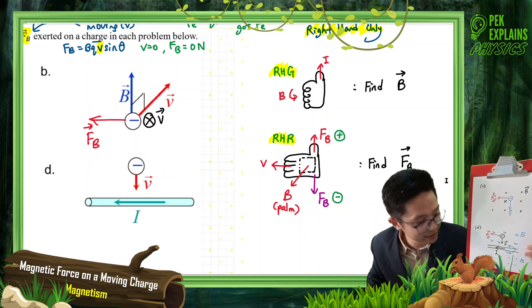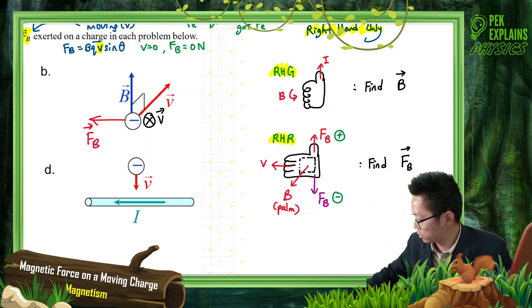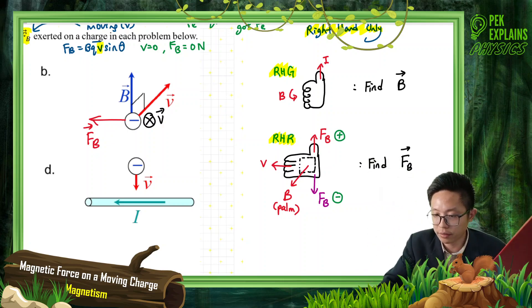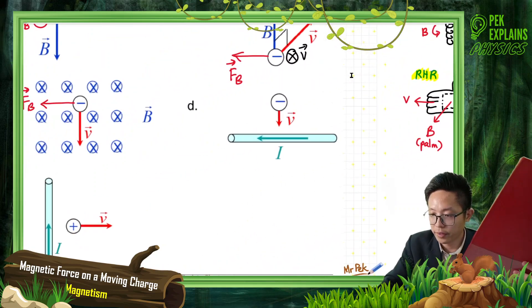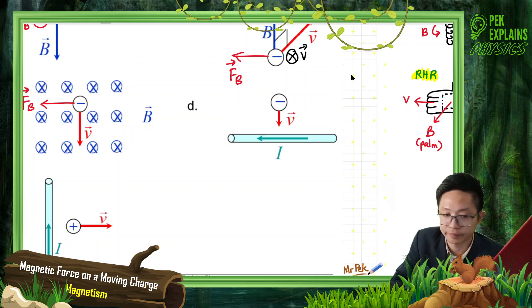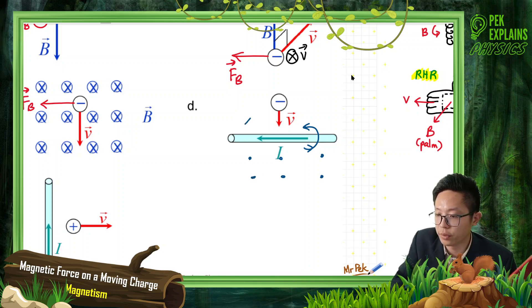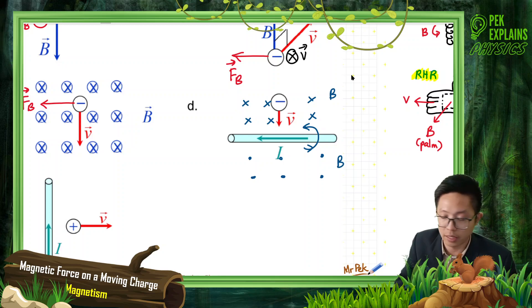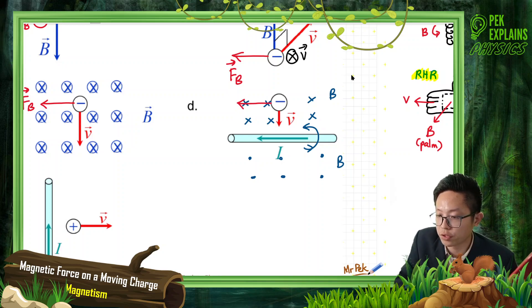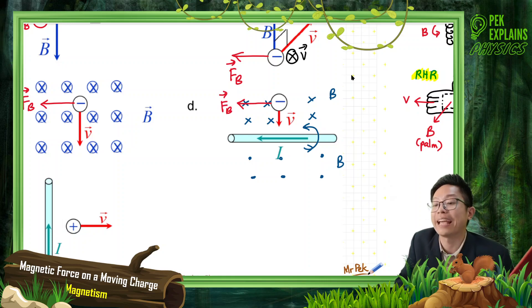So for Question D, the force is to the left. The magnetic field going into the page was provided by the current conductor. Using the right-hand grip rule I found the field direction, then applied the right-hand rule to find that the force is to the left — opposite the thumb, because it's a negative charge.